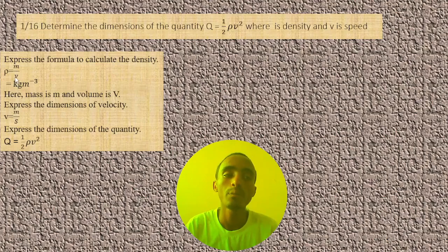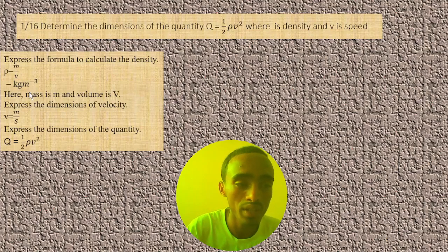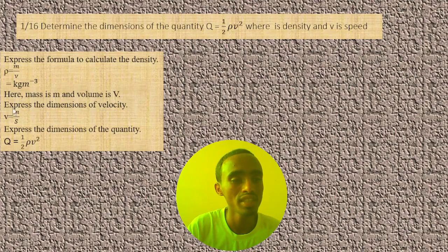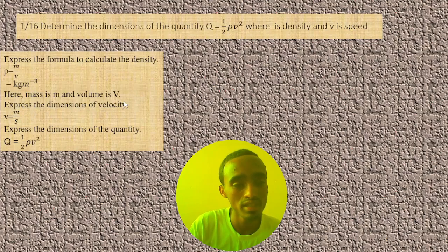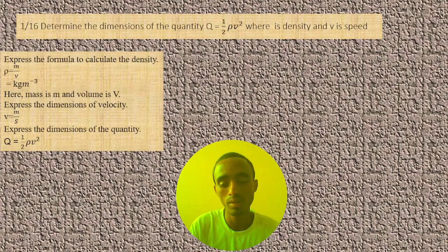Here you can use this, you will get these units where M is mass and V is volume as you can see here. Then we can express the dimension of velocity. Velocity is equal to meter per second square, and express the dimension of the quantity 1/2 ρv².